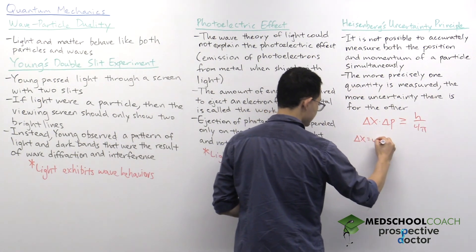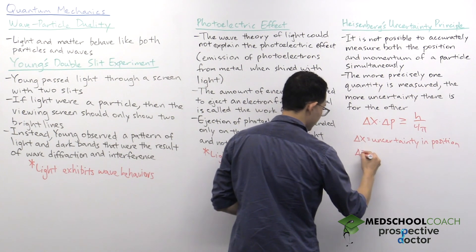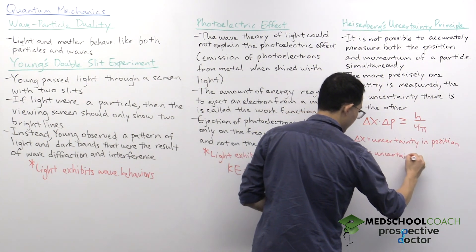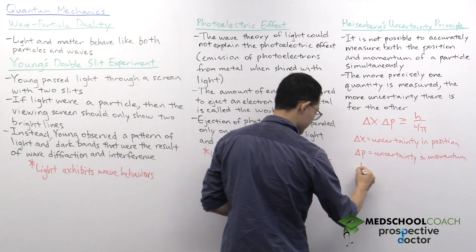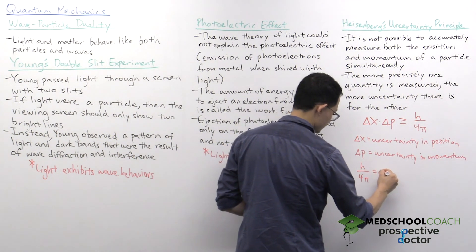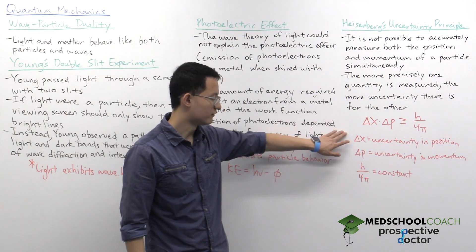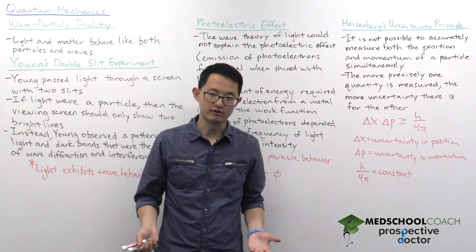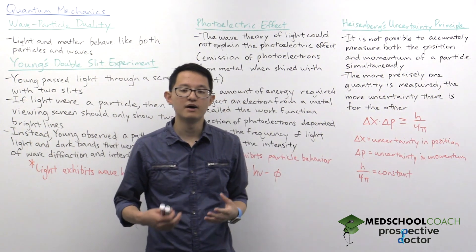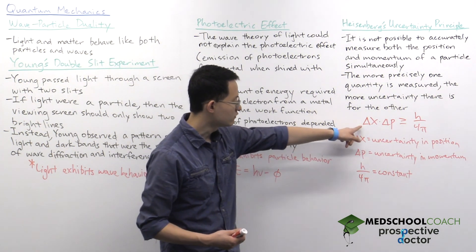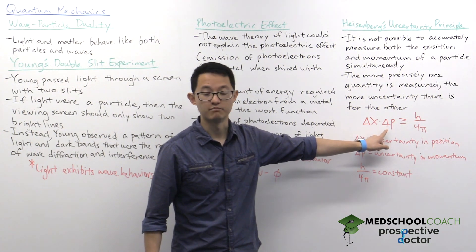This is often reflected in the equation: delta x times delta p is greater than or equal to h over 4 pi. Here, delta x is the uncertainty in position, delta p is the uncertainty in momentum, and h is Planck's constant — h over 4 pi is just a constant value. It's impossible for your uncertainty in both position and momentum to be zero, because the product of your two uncertainties must always be greater than some positive constant. Furthermore, if you decrease your uncertainty in position, you must have greater uncertainty in your momentum.